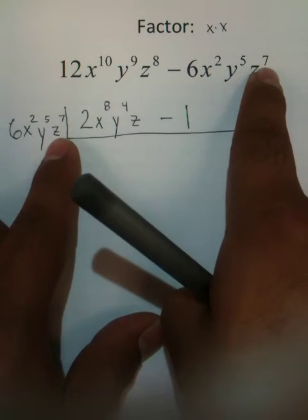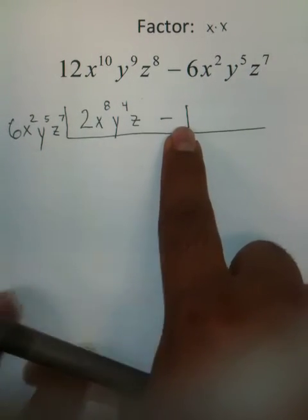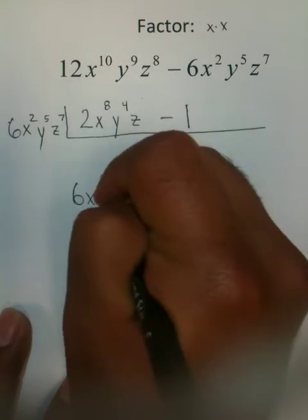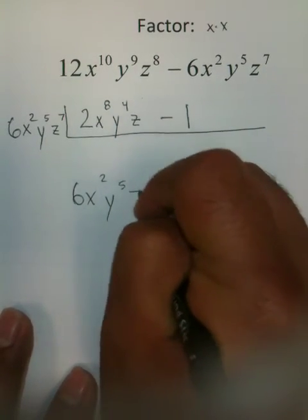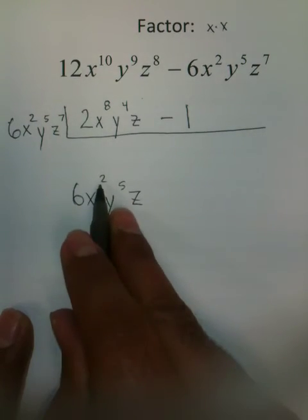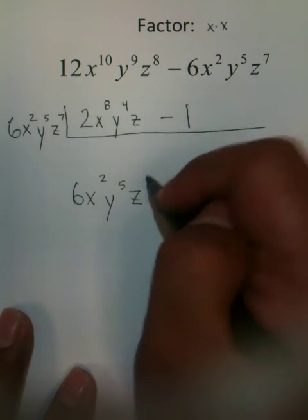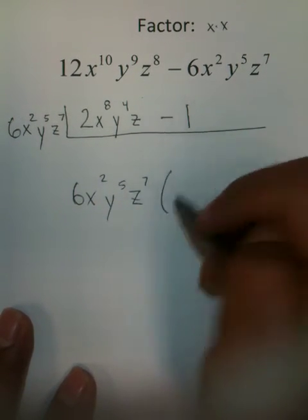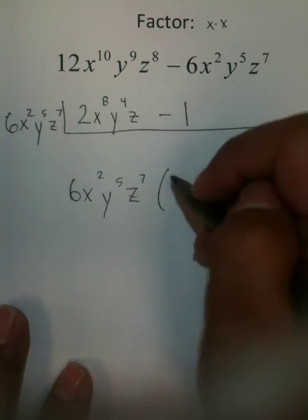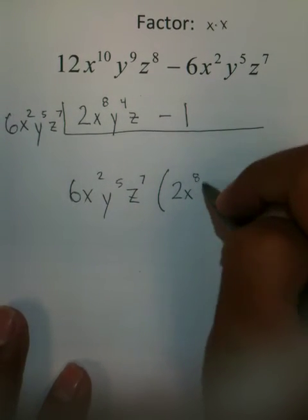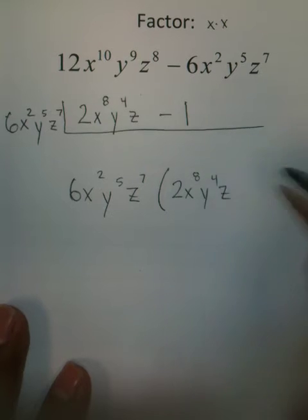And z to the 7th divided by z to the 7th is also 1. So, your answer to this problem would look like this. 6x squared y to the 5th z to the 7th times the quantity 2x to the 8th y to the 4th z minus 1.